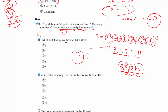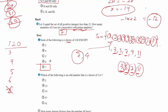Next question: which of the following is a factor of 120, except? Factors of 120 are numbers that can divide it. 3 divides it, 4 divides it, 5 divides it, 6 divides it, but 7 cannot divide 120. So 7 is not a factor of 120 and is the answer.